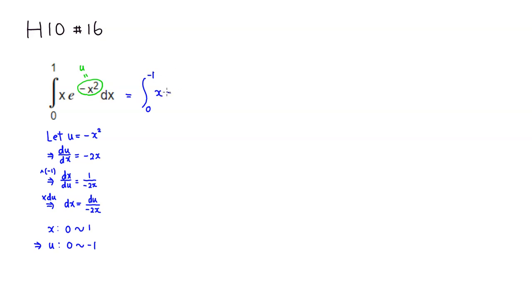Then you have, I'm going to just leave x as it is, then we have e to the u. Then dx, remember that the expression dx shows up right here, so we can just plug that in, so it's du over negative 2x. And the good thing is there's x on top and there's x on the bottom, so you can cancel them out.